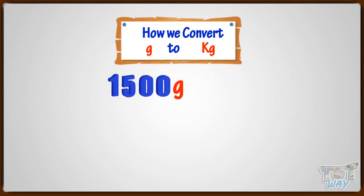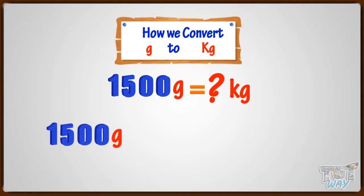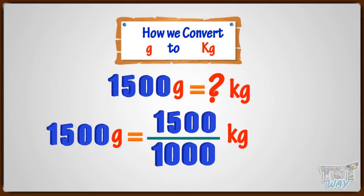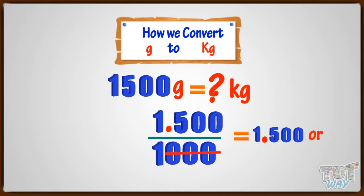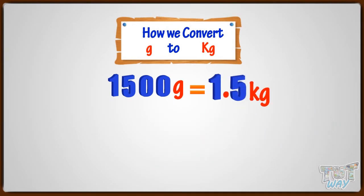1,500 grams is equal to how many kilograms? 1,500 grams equals 1,500 divided by 1,000 kilograms. Cutting three zeros and putting decimal after three digits from right, we get 1.500 or 1.5. So, 1,500 grams equals 1.5 kilograms.